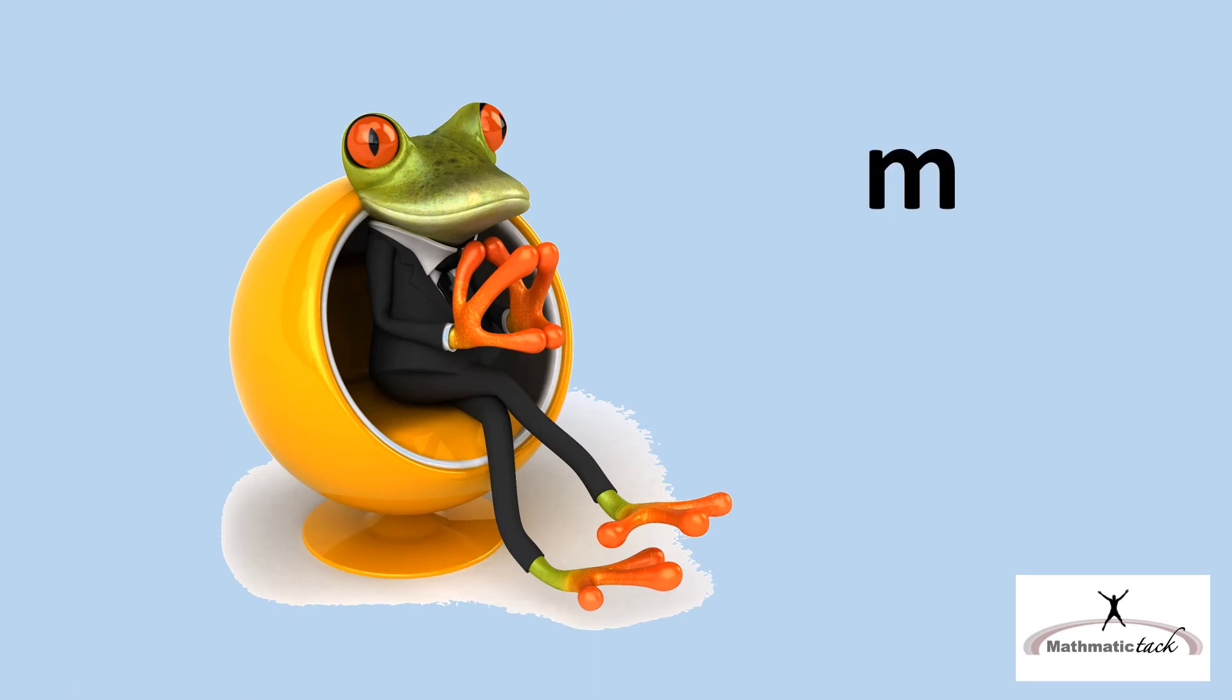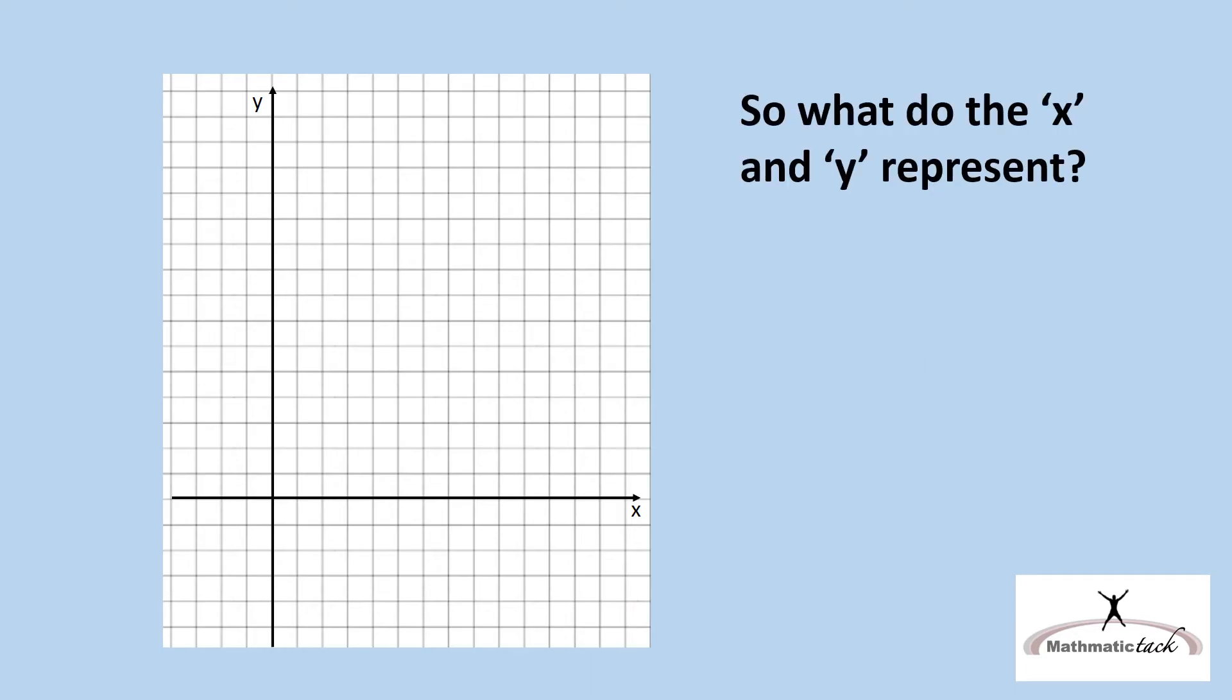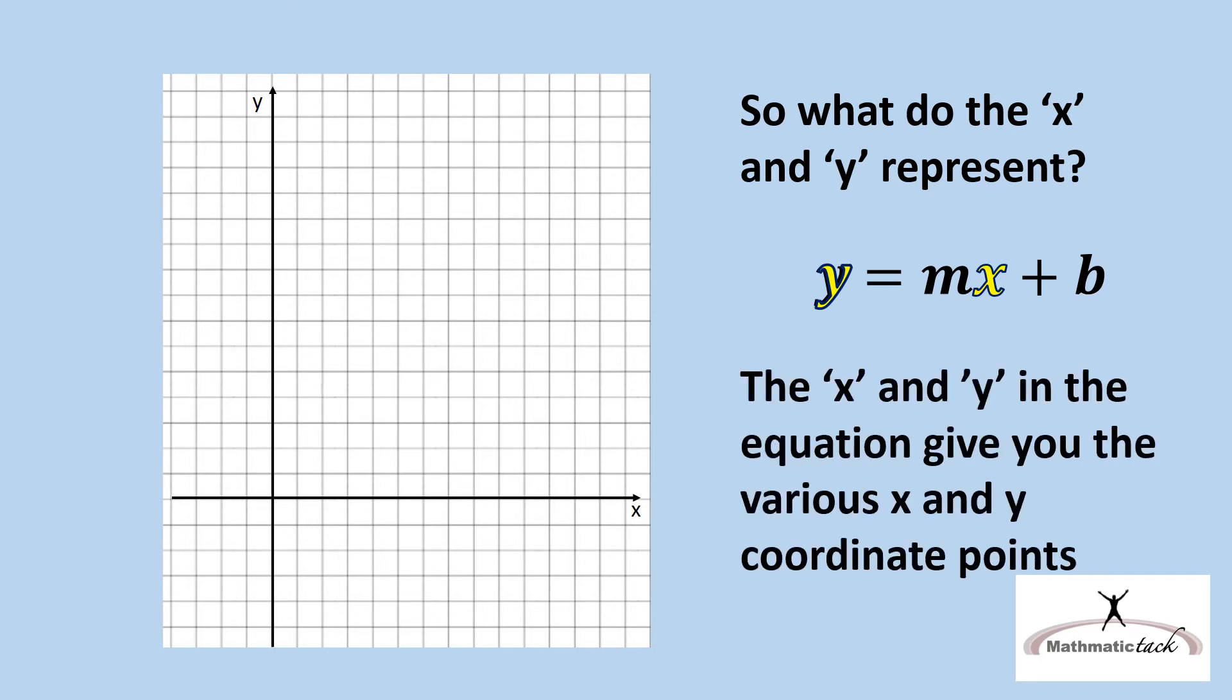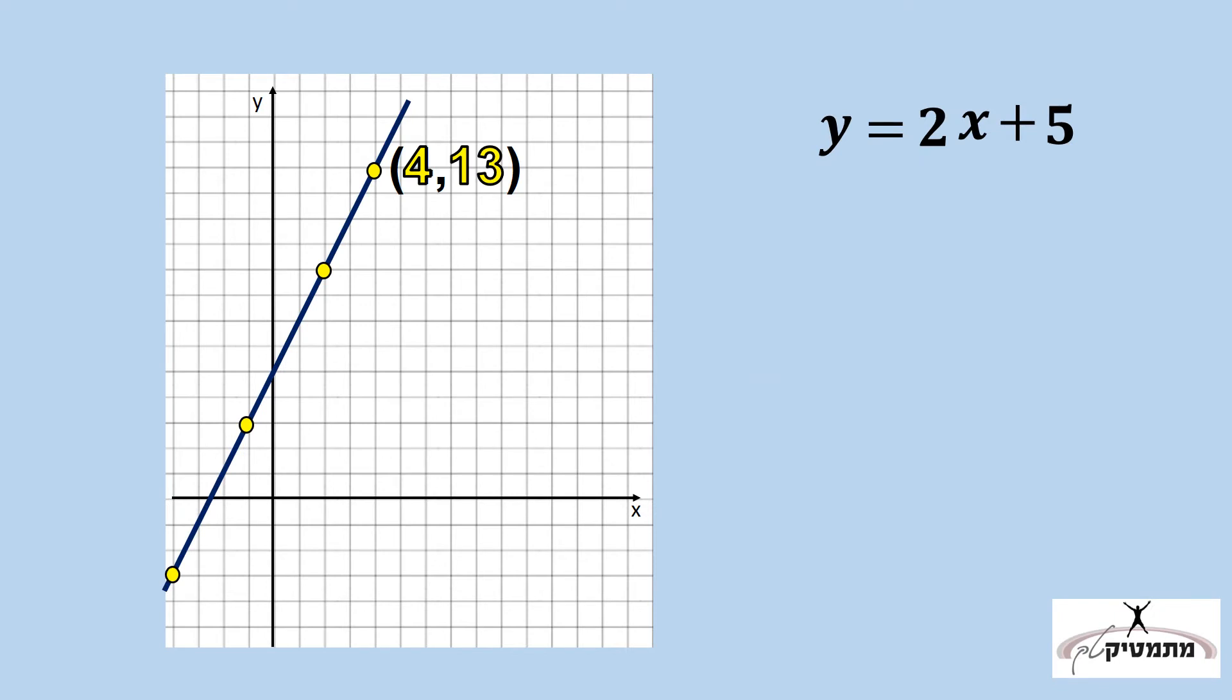So now we understand the m and the b from the equation. But what do the x and y represent? The x and y variables give you the values for the different coordinate points. So let's see how this applies.